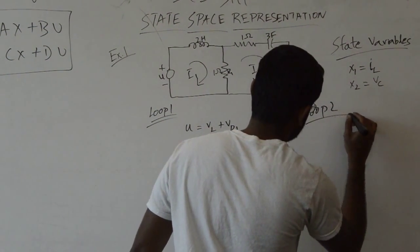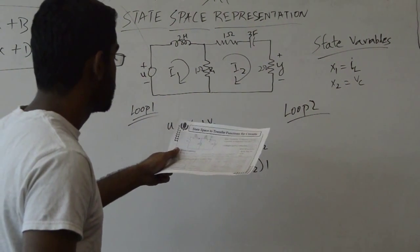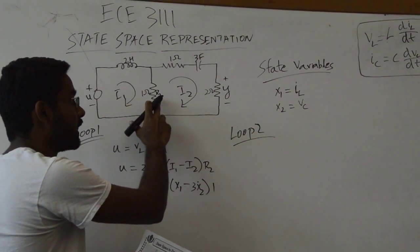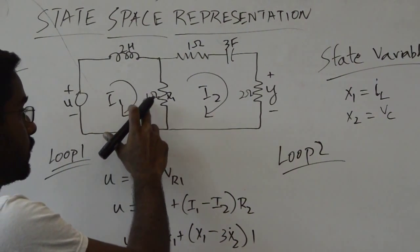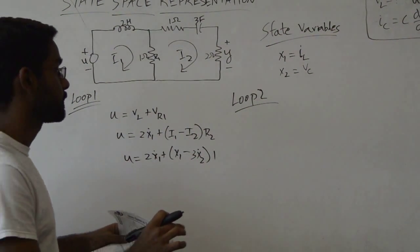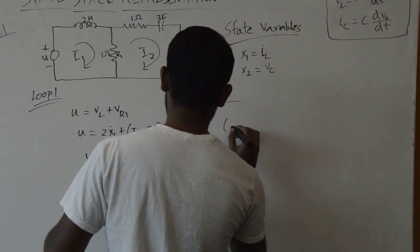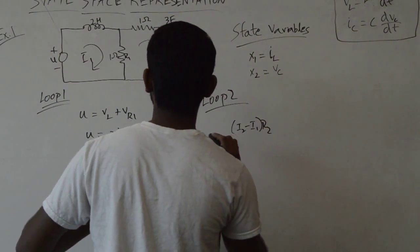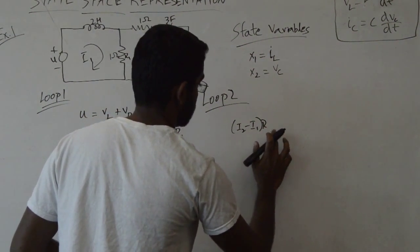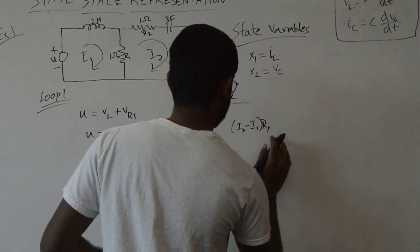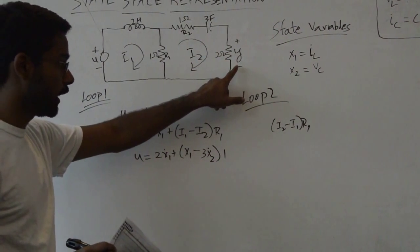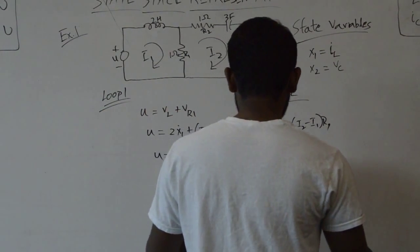Moving on to loop 2, there are no sources so everything equates to zero. For the shared resistor, the voltage drop with respect to this loop is (I2 minus I1) times R. I also need the voltage across the capacitor and the output voltage, as well as the voltage drop across the remaining resistor.